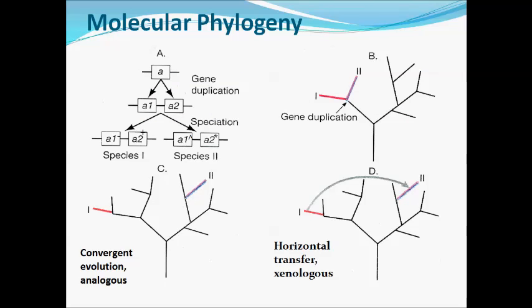In figure A, we see the duplication of gene A that produces tandem genes A1 and A2 in the ancestor of species 1 and 2. Due to accumulation of mutations in A1 and A2, two different species — species 1 and species 2 — are generated. The same concept is shown in figure B, where due to gene duplication there is a branching point and two different species are formed.